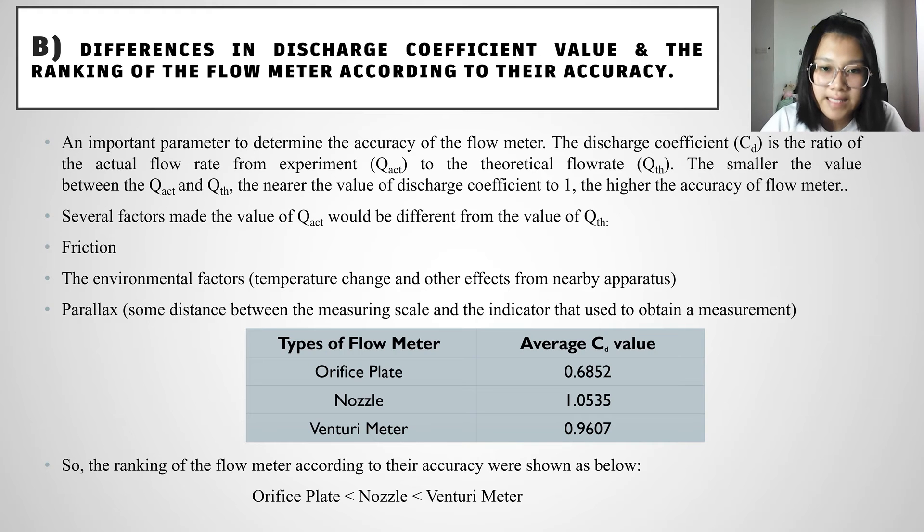From this table, we can see that the orifice plate average CD value was 0.6852 and for the nozzle was 1.0535 and for the venturi meter was 0.9607.